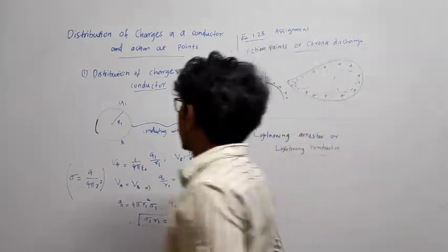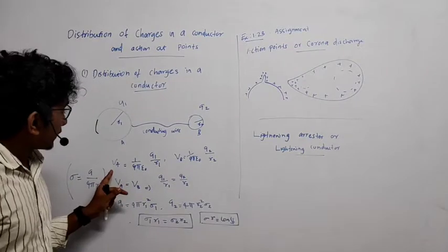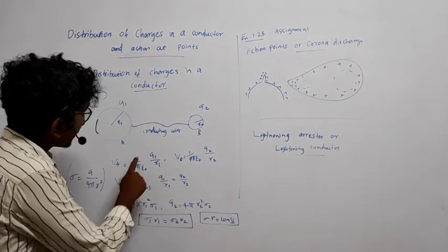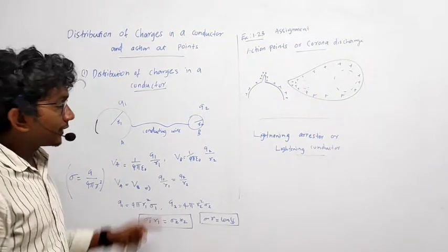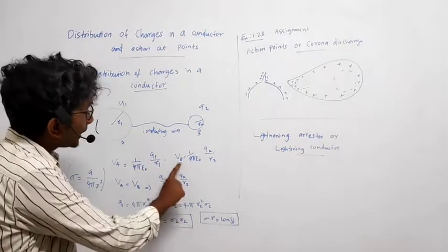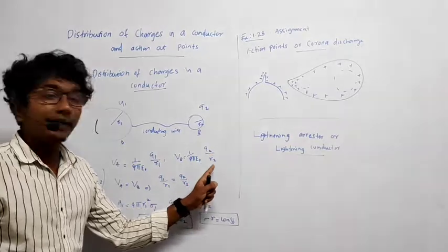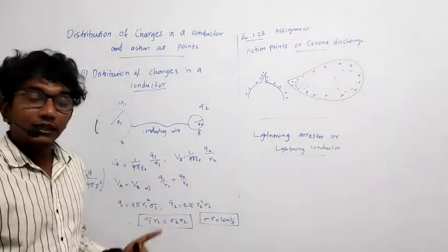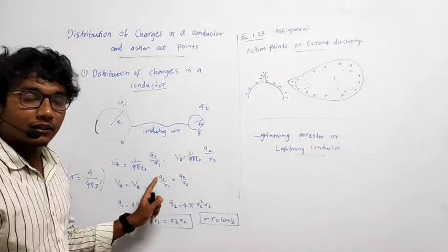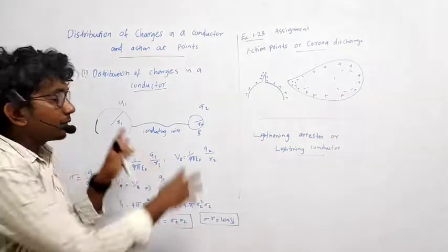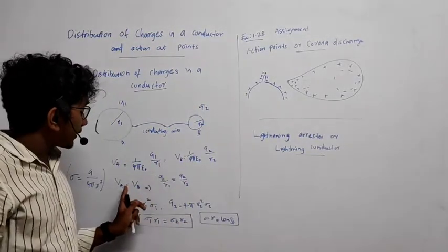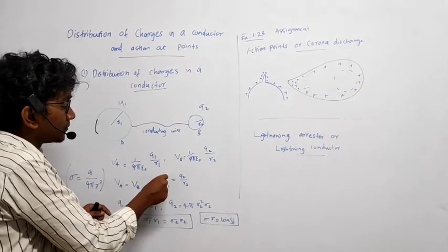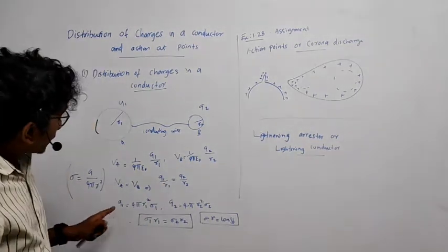So V_A is equal to (1/4πε₀) × Q1/R1, and V_B is equal to (1/4πε₀) × Q2/R2. Our condition is V_A = V_B. Equating both, the (1/4πε₀) cancels, giving us Q1/R1 = Q2/R2.